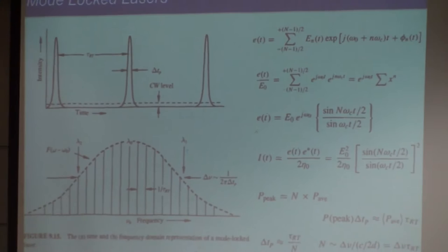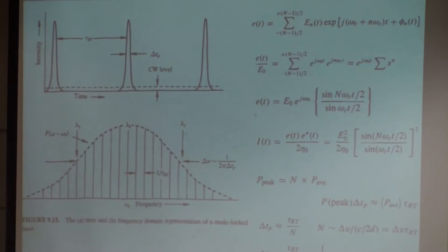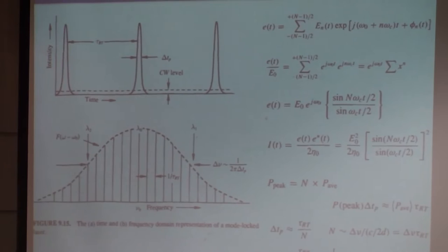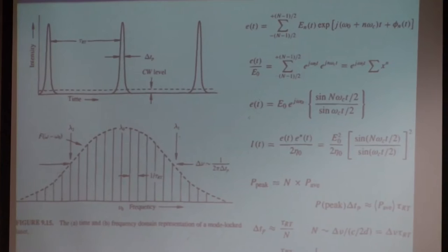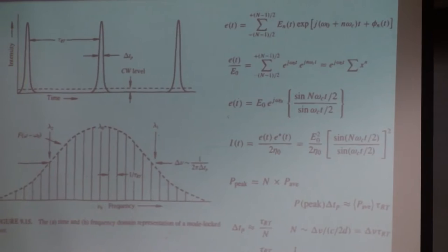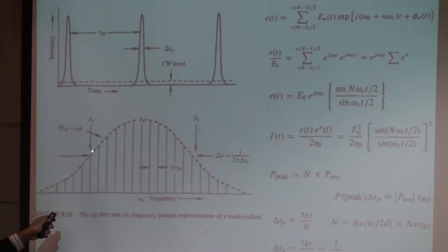Today we'll look at how to mode-lock the laser. With inhomogeneous broadening, it's fairly easy to see that you can have various modes — some atoms going one way, some the other — and the gain spectrum can be pulled down locally through hole burning. So you get the whole curve pulled down at specific frequencies.